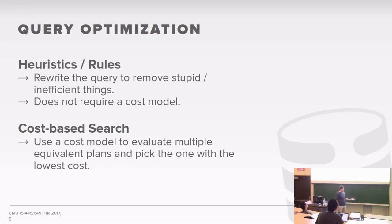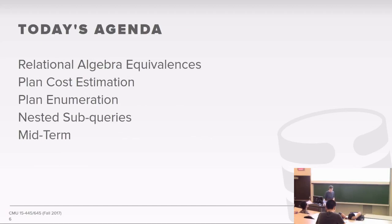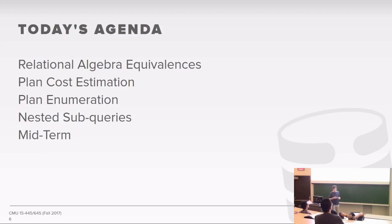The second approach is a cost-based search, where the database system can't figure out just by looking at the query what the right plan should be. Instead, it does a search over a bunch of different query plans and uses an internal cost model to estimate which one will have the lowest cost. This cost-based search approach was the major contribution from the System R work. Today, we'll start with heuristic or rule-based optimizations based on relational algebra equivalencies, then talk about cost estimation, plan enumeration, join ordering searches, nested subqueries, and do our midterm review.